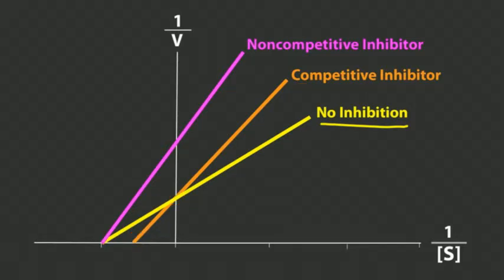A non-competitive inhibitor is basically taking enzyme binding sites out of commission, decreasing the maximum reaction velocity — Vmax. A non-competitive inhibitor doesn't change KM at all, but it does decrease Vmax. So with a non-competitive inhibitor, the x-intercept doesn't change, but the y-intercept goes up. When the y-intercept increases, Vmax decreases. So a non-competitive inhibitor decreases Vmax. We're going to look at competitive and non-competitive inhibitors again in the next video when we talk about efficacy and potency.